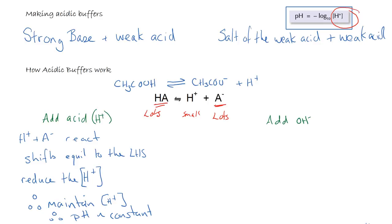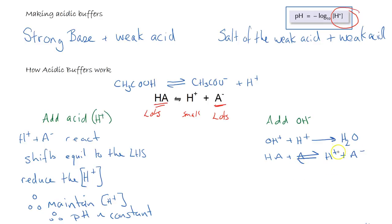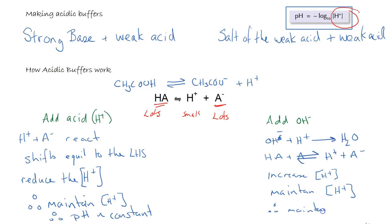If we add some base — OH⁻ — the OH⁻ is then going to react with the hydrogen ions to make water, because that is just a neutralisation. As this happens, the equilibrium of the acid and the salt product is going to shift to the right-hand side to produce more hydrogen ions. This increases the concentration of hydrogen ions in order to maintain the hydrogen ion concentration, because those hydrogen ions are being consumed by the OH⁻, therefore maintaining a constant pH.